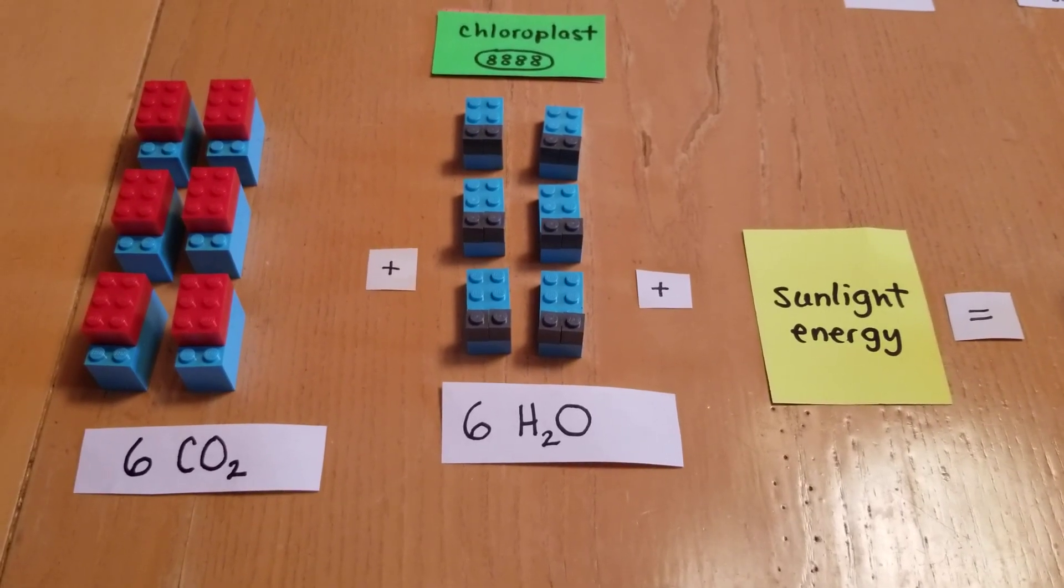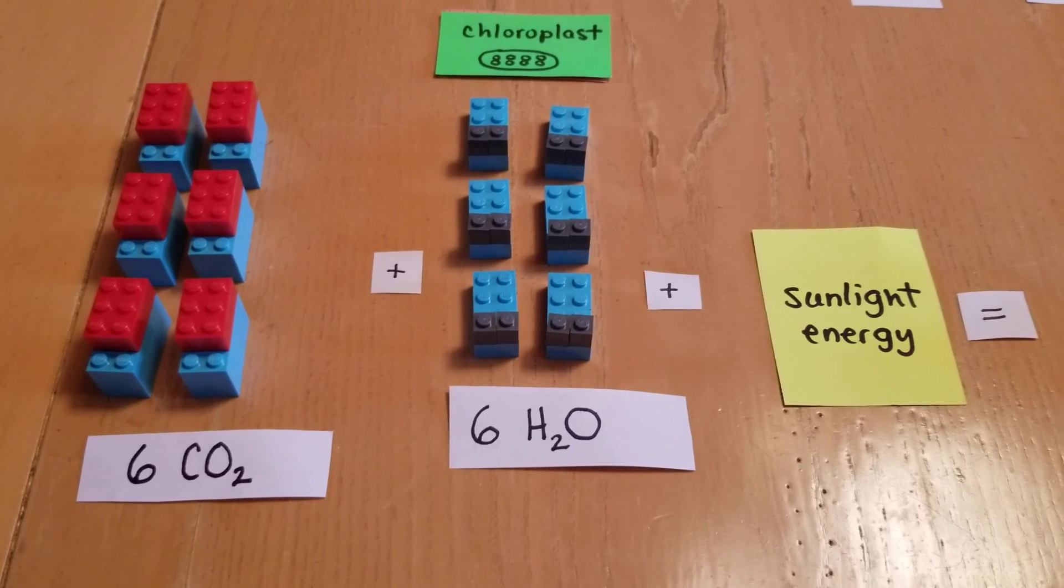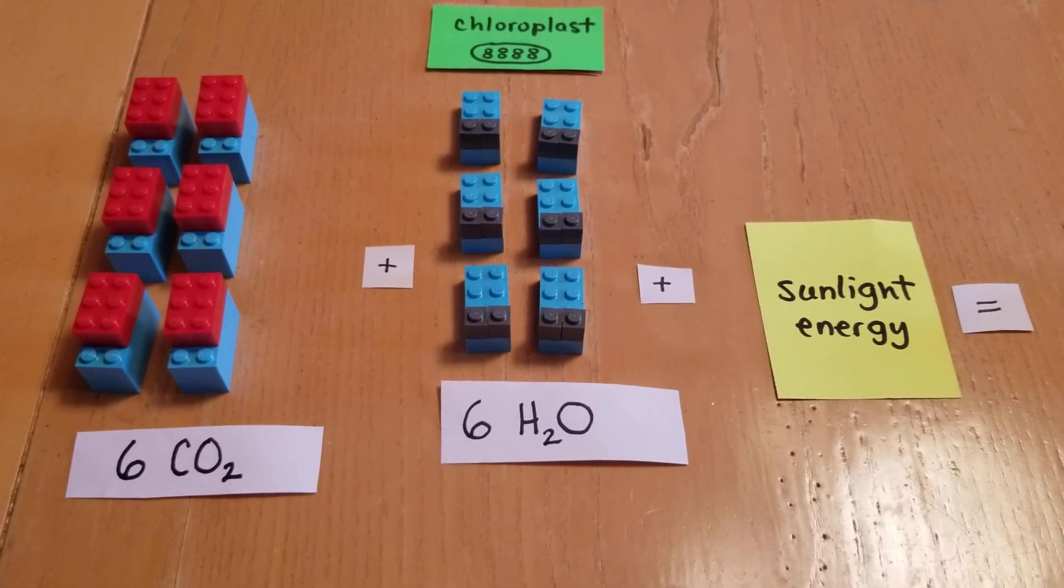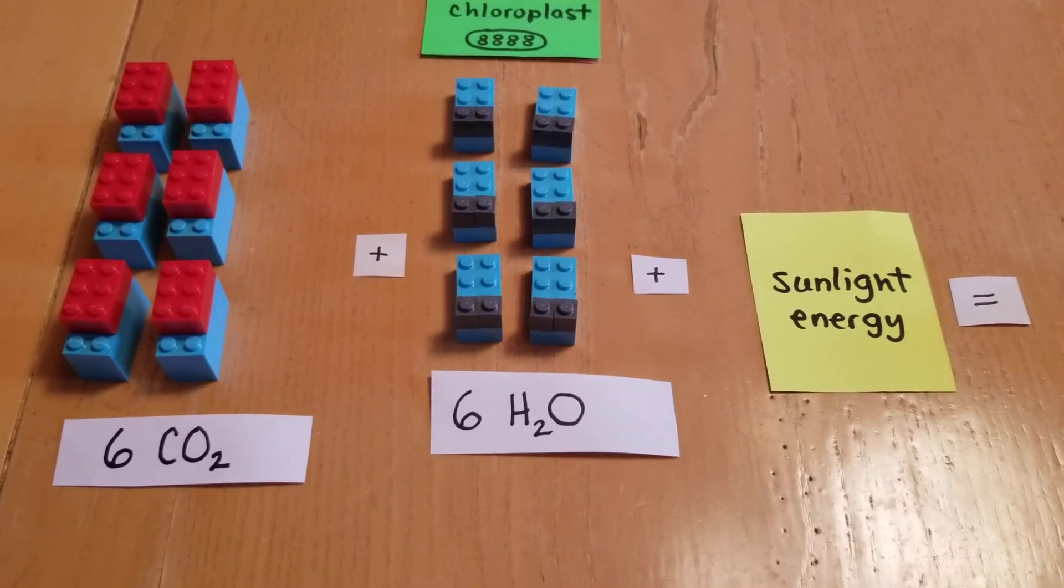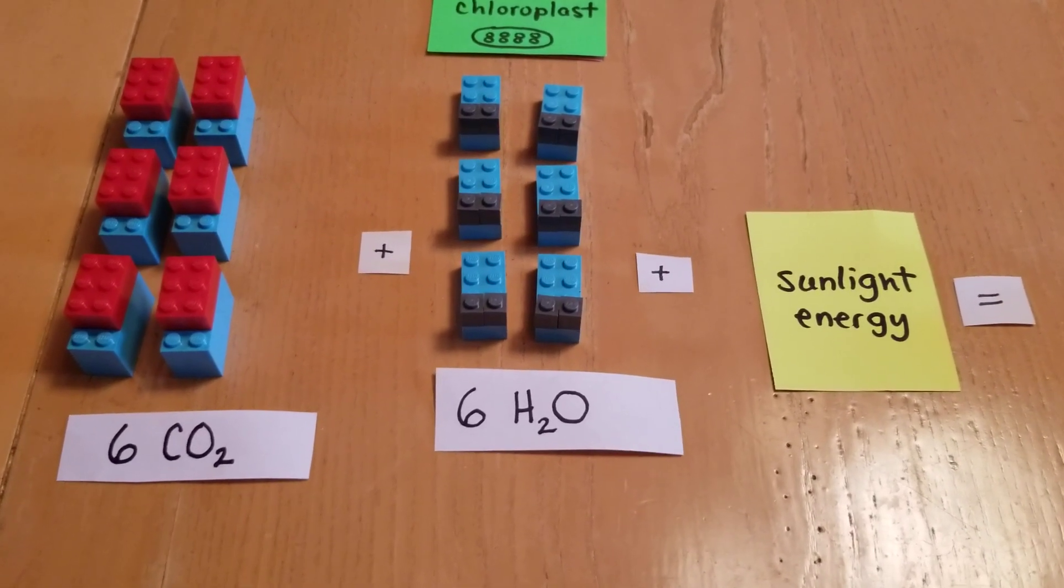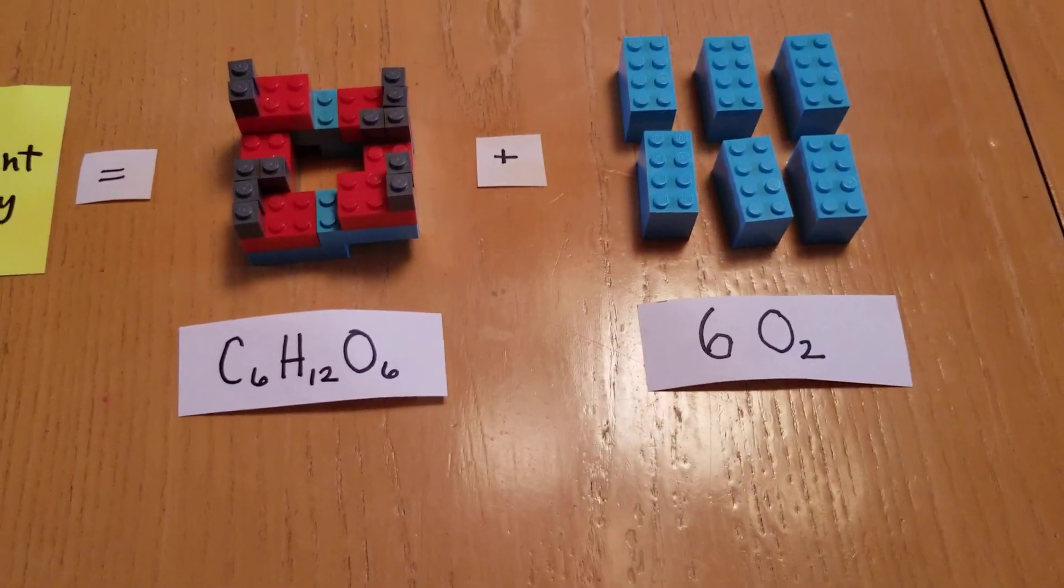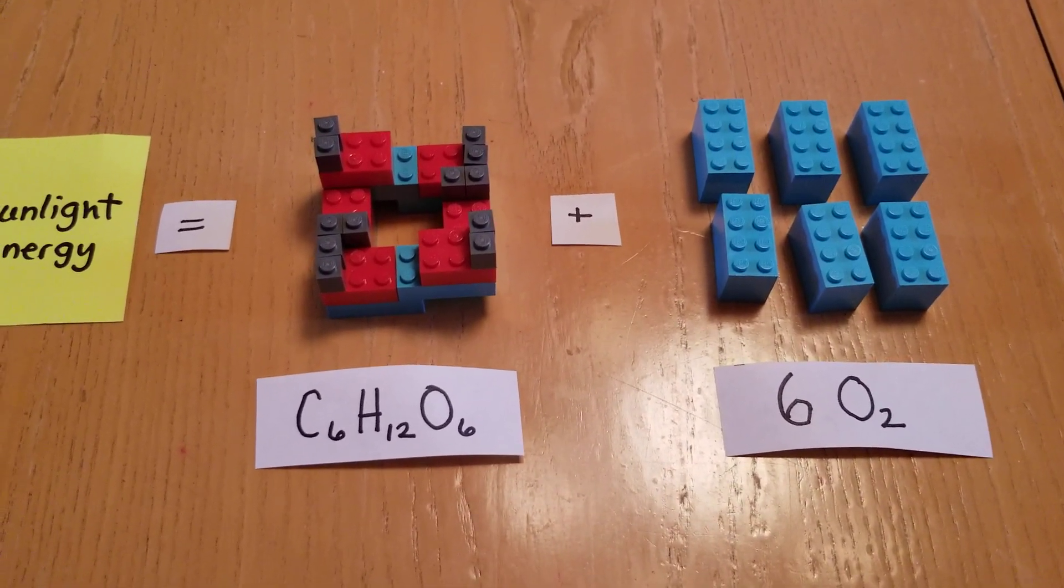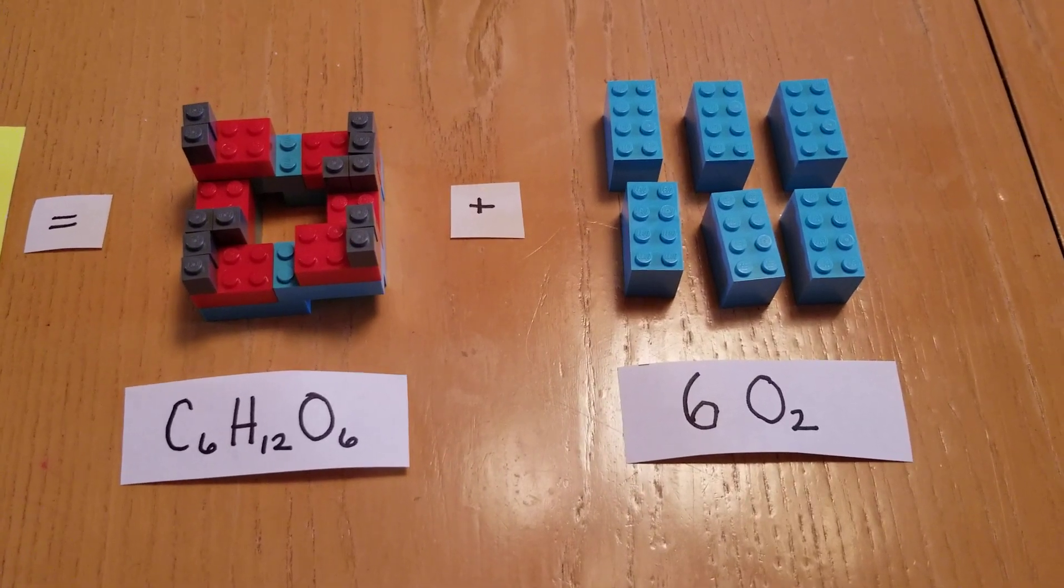So when I break these apart and put them back down to their base elements, which is what happens in the chloroplast, then my product ends up being one molecule of glucose and six molecules of oxygen.